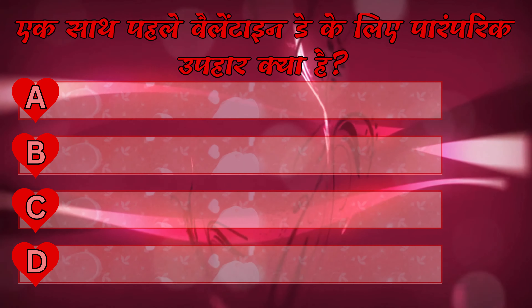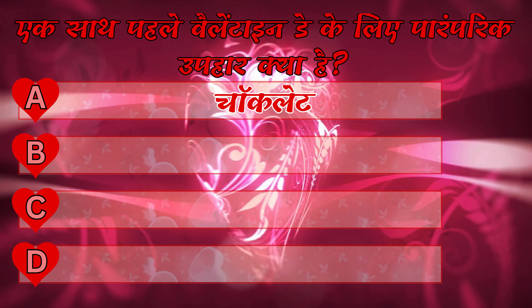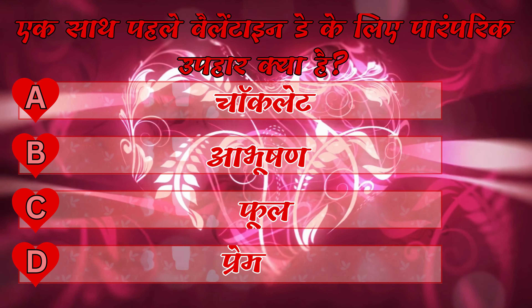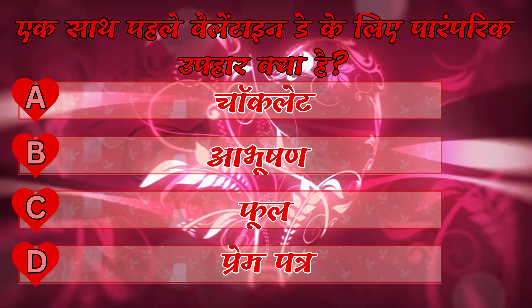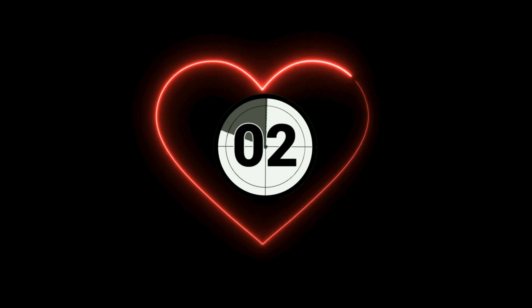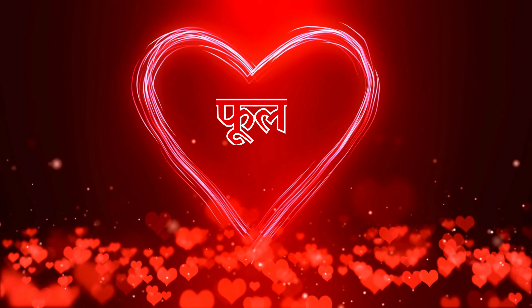एक साथ पहले वेलेंटाइन डे के लिए पारंपरिक उपहार क्या है? A. चॉकलेट, B. आभूषण, C. फूल, D. प्रेमपत्र. आपका जवाब होगा उत्तर C. फूल.